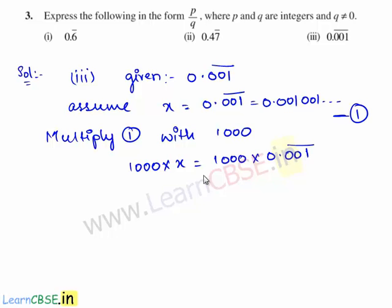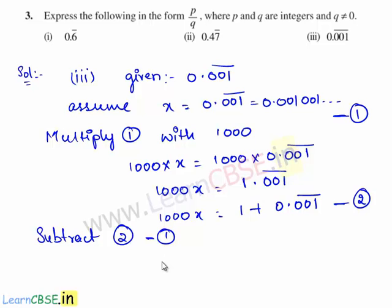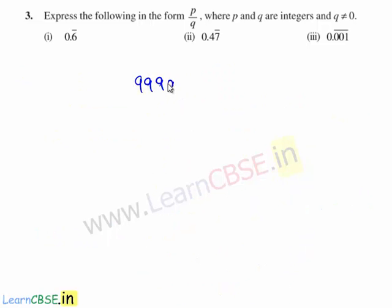Therefore 1000 times x is equal to 1000 times 0.001 bar. This gives 1000x is equal to 1.001 bar, which can be written as 1000x is equal to 1 plus 0.001 bar. Consider this as equation 2. Now let us subtract equation 1 from equation 2. Therefore 1000x minus x gives 999x.